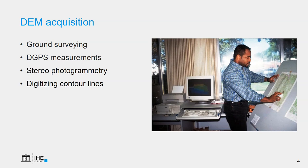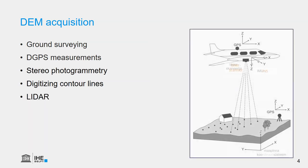Also very laborious is digitizing contour lines. Many maps have contour lines printed on them, and we can use a device to digitize these contour lines — a lot of manual work. We can then interpolate those contour lines to a raster that we can use in the models.